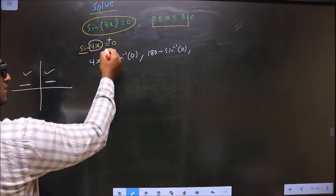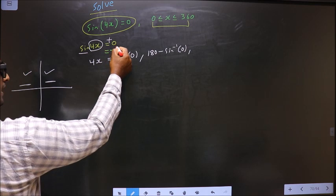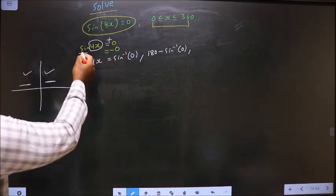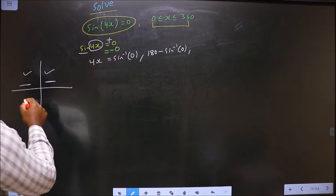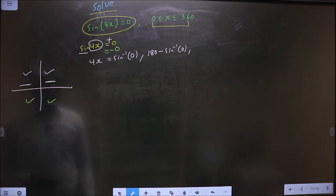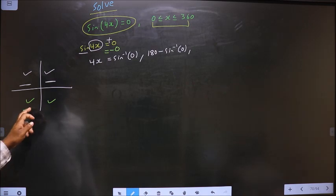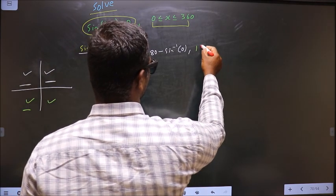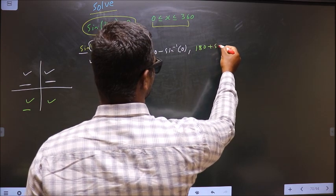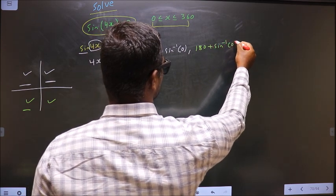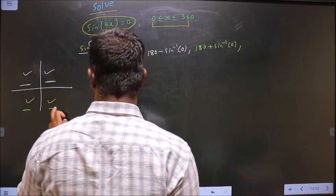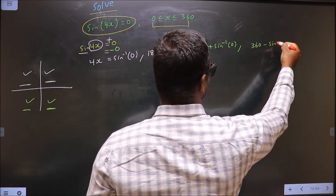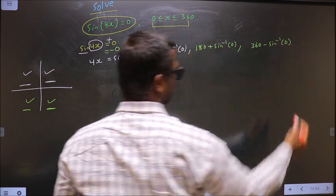For the value 0, we can also consider negative sin. In that case, sin is negative in the third and fourth quadrants. To get an angle in the third quadrant, we do 180 plus sin⁻¹(0). To get an angle in the fourth quadrant, we do 360 minus sin⁻¹(0).